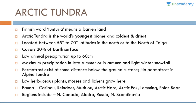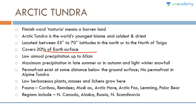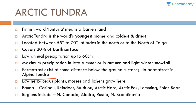In arctic tundra, the word 'tundra' is derived from the Finnish word 'tunturia' meaning a barren land. Arctic tundra is the world's youngest biome and also the coldest and driest. It is located between 55 to 70 degree latitudes in the northern hemisphere, north of the taiga, and covers 20 percent of the earth's surface. Annual precipitation is low, up to 60 centimeters, with maximum precipitation in late summer or autumn and light winter snowfall. Permafrost exists below the ground surface in arctic tundra, but no permafrost exists in alpine tundra.